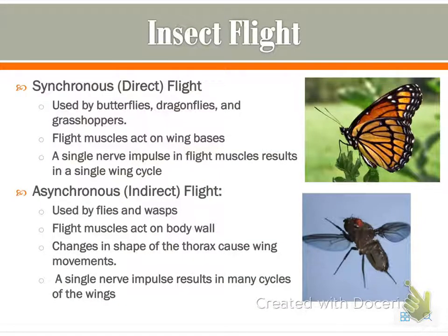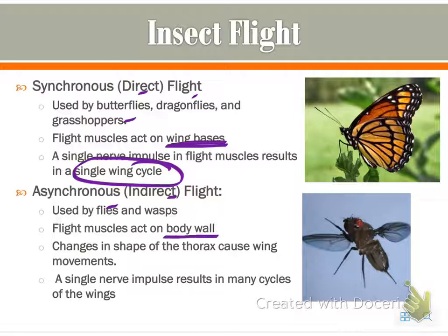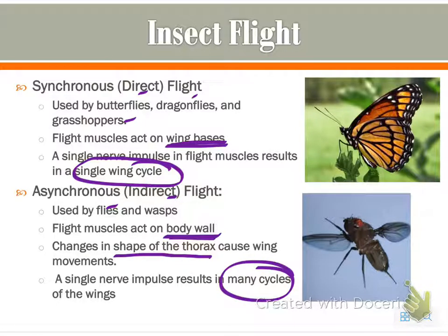Synchronous or direct flight examples include butterflies, dragonflies, and grasshoppers. These flight muscles act on a wing base and have a single wing cycle. Indirect or asynchronous flight is used by flies and wasps. This acts on a body wall — the thorax actually changes shape, causing the wings to move — and they have many cycles of wings. It's also important to note that both types of insects have muscles to control tilt as well.